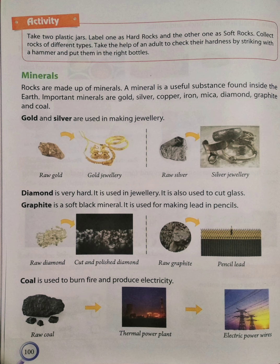Gold and silver, as we know very well, are used in making jewelry. Diamond is very hard and is used to make jewelry as well as to cut glass.